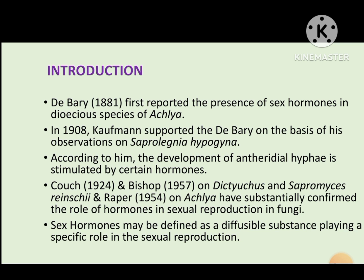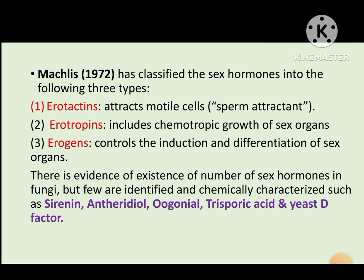These sex hormones in fungi were first observed in detail in the heterothalic species of Achlya — specifically Achlya ambisexualis and Achlya bisexualis. Later, Kaufman in 1908 observed them in Saprolagnia hypogyna. After that, various scientists worked on their synthesis and control. Then Michaelis in 1972 classified the sex hormones into three groups based on their function: erotaxin, erotropin, and erogen.